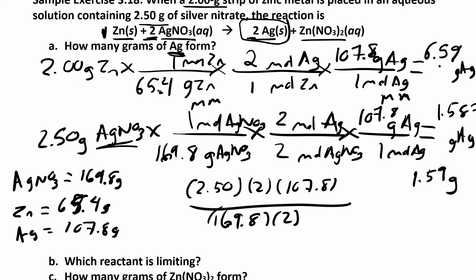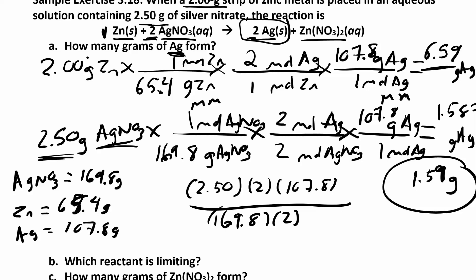Comparing the two results: if all two grams of zinc were used, we'd get 6.59 grams of silver; if all 2.5 grams of silver nitrate were used, we'd get 1.59 grams of silver. We make the lesser amount — 1.59 grams. Silver nitrate is the limiting reactant because it runs out first, and we have excess zinc.